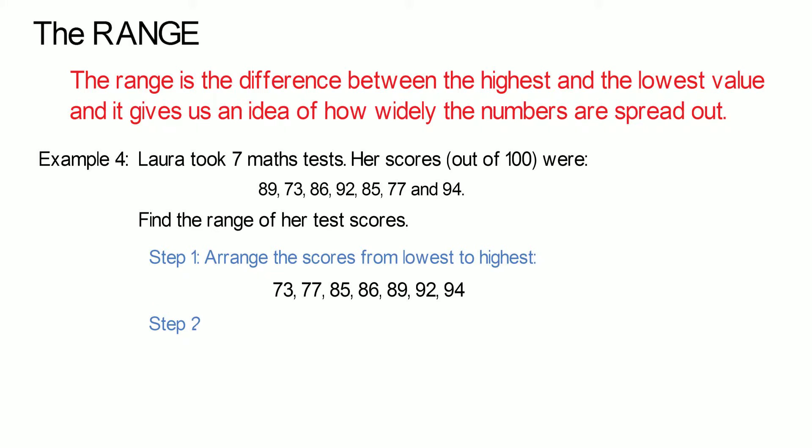Step 2: The range is the biggest take away the smallest. The range is therefore 94 take away 73, which is 21.